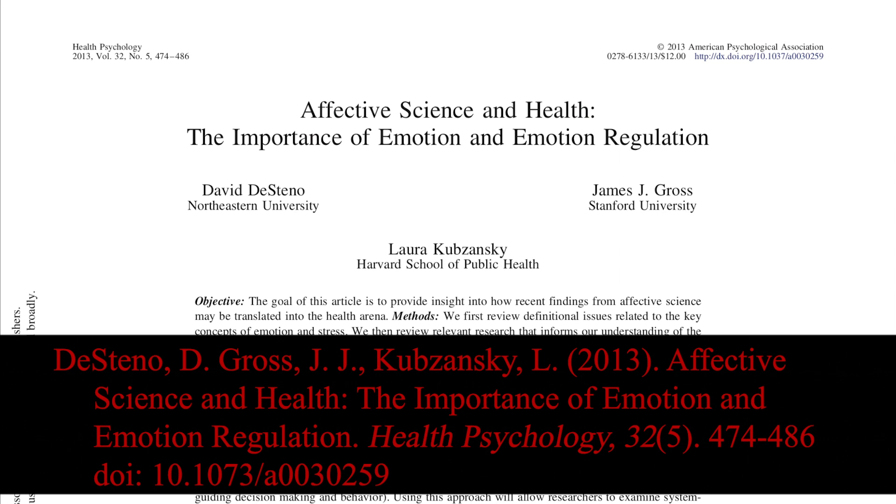There is also different formatting for more than one author. For example, if an article has two authors you state both names, however the names are separated by an ampersand. If there are three to six authors, you do the same and the last author's name is preceded by an ampersand. When there are seven or more authors, after the sixth author use an ellipsis in place of the author's names, then list the final author's name. There should never be more than seven authors listed in the reference, even if there are ten or more authors.